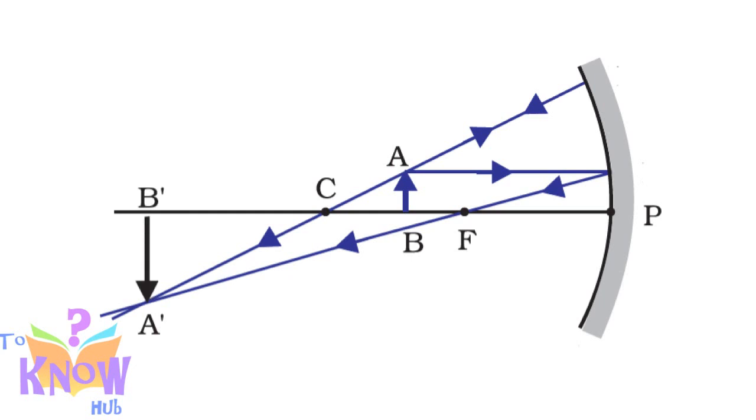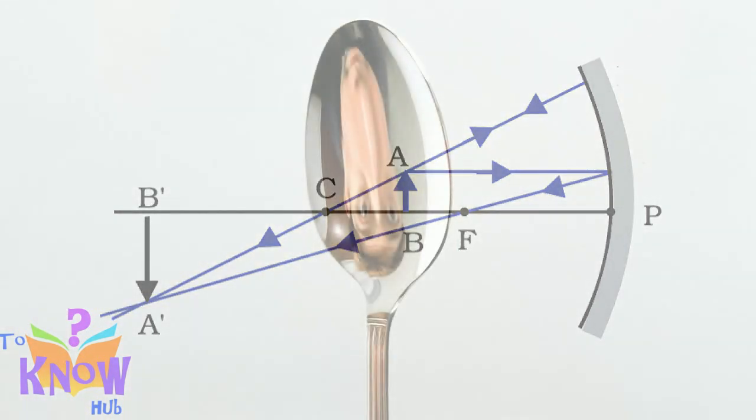Same way, images of other points between A and B is formed between A dash and the principal axis. Means we get an inverted image. So this is how we draw a basic ray diagram.